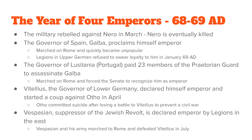So Galba replaced Nero, Otho replaced Galba, but there was another person named Vitellius who declared himself emperor and overthrew Otho. Otho and Vitellius went to war and battled each other, and when Vitellius defeated Otho, Otho took his own life to try to stop the civil war from occurring.